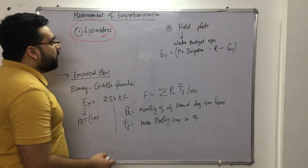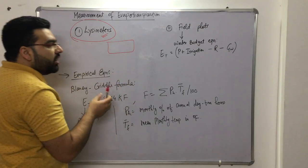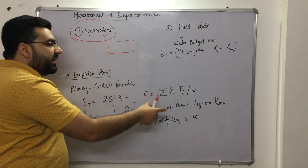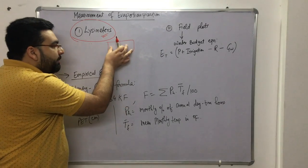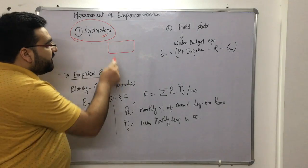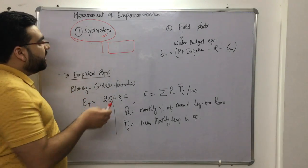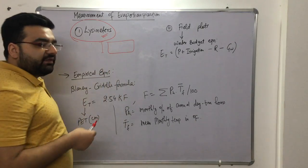In a lysimeter, we have a soil block where plants have grown. This soil block is maintained exactly as the environmental conditions are. We maintain the moisture content in the soil block. There is a proper arrangement of instruments which measure the moisture content in that soil block.